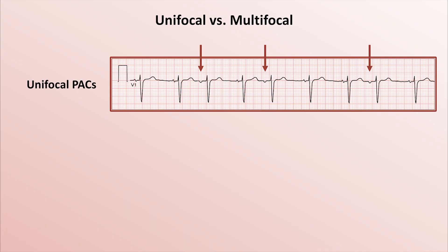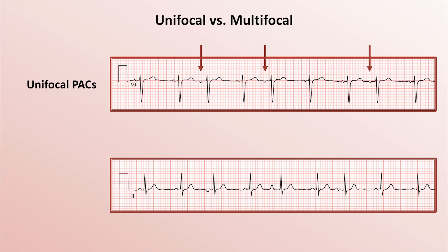In contrast, in this rhythm strip, in addition to the five sinus-appearing beats, there are three PACs in which each P-wave has a unique morphology. These are multifocal PACs. We saw an extreme example of this in a preceding video on tachyarrhythmias in a rhythm called MAT, or Multifocal Atrial Tachycardia, in which there are so many multifocal PACs that it's not even possible to clearly identify which, if any, are the sinus P-waves. But it's important to realize that not all rhythms with multifocal PACs are MAT.